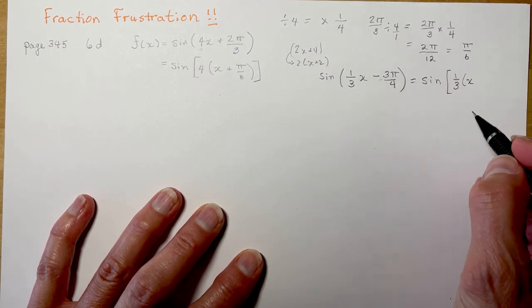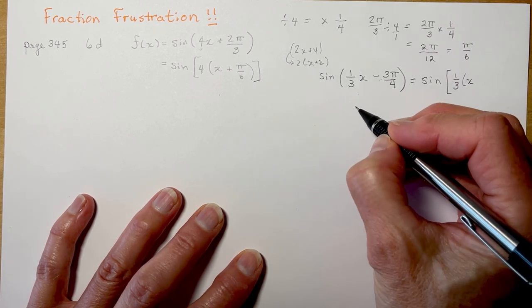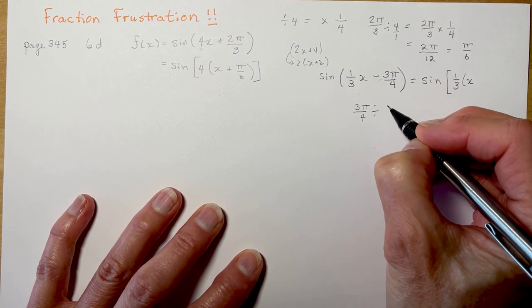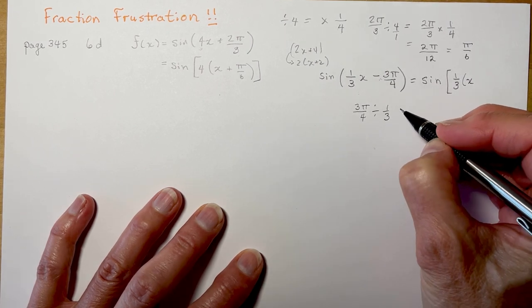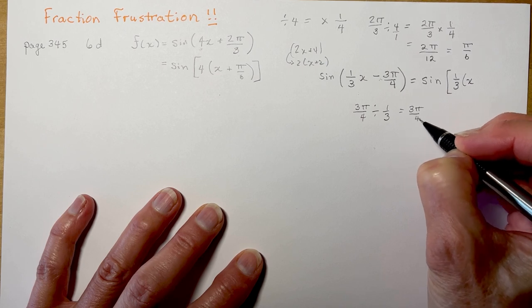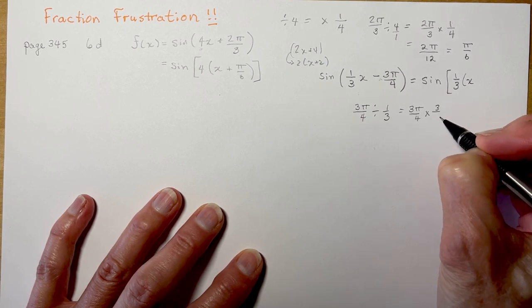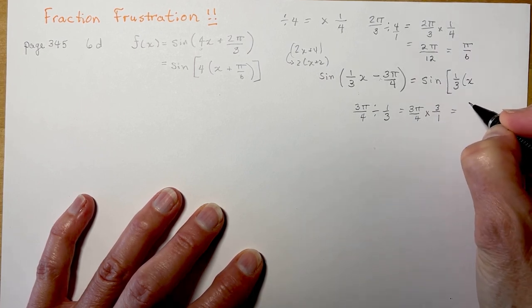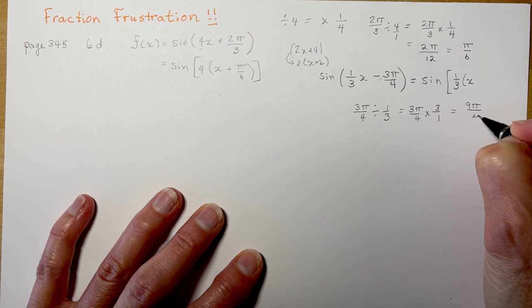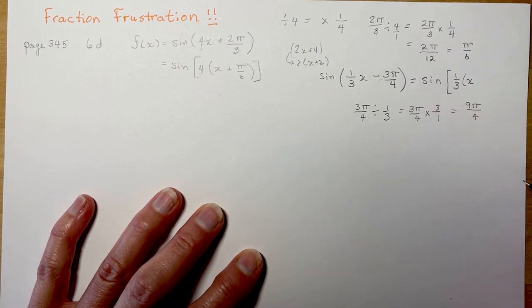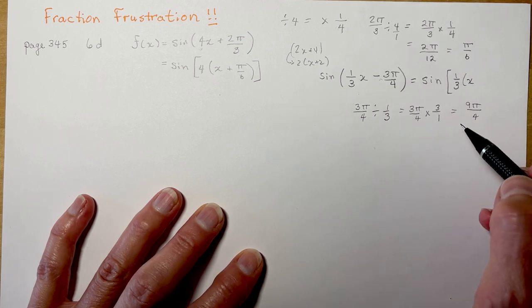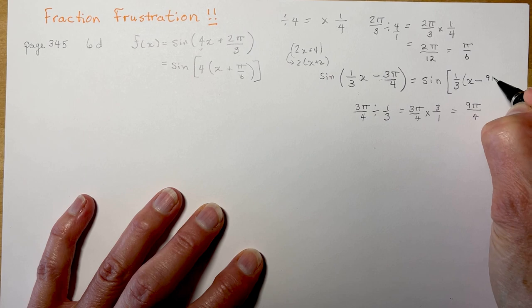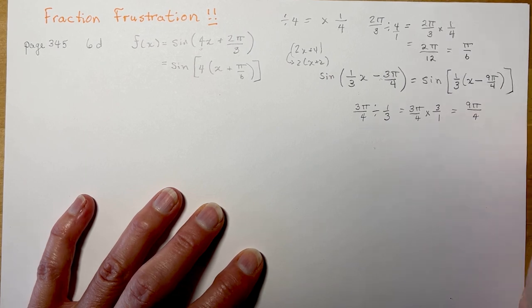It's always a good idea to have a scrap piece of paper. I'll just write: 3π/4 divided by 1/3 equals 3π/4 times 3/1, which gives 9π/4. So minus 3π/4 divided by 1/3 gives minus 9π/4. And there you have it.